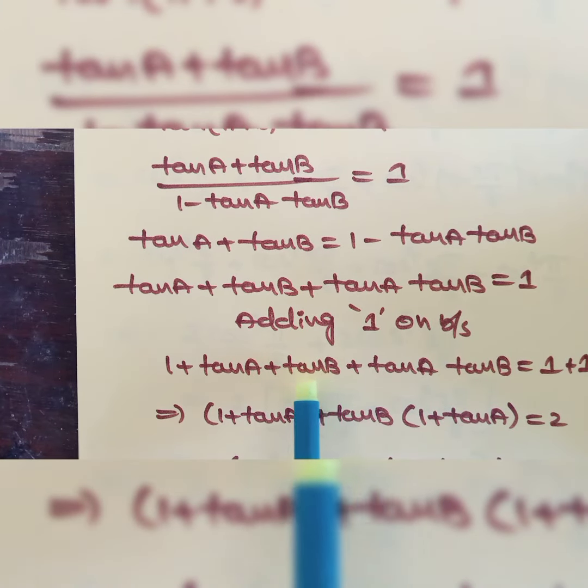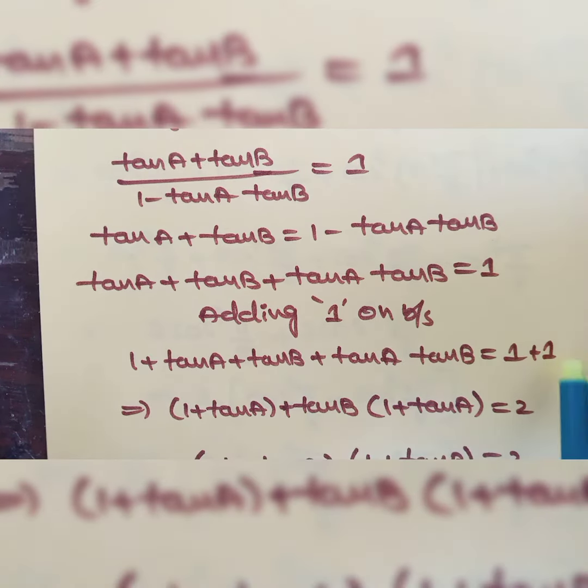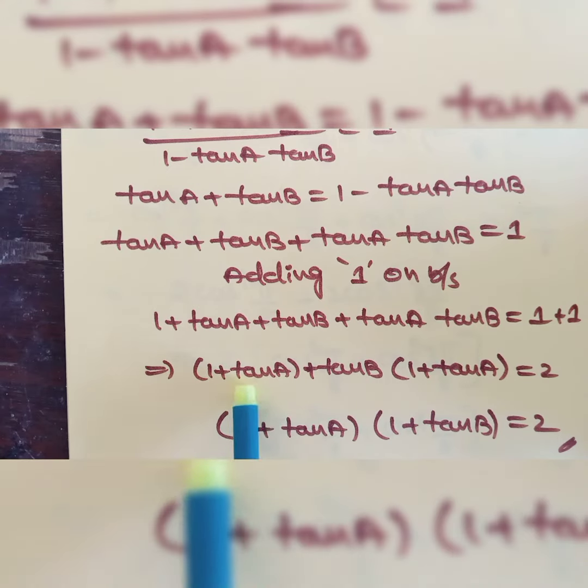Finally we are factoring by taking (1 plus tan A) common. We will get (1 plus tan A) times (1 plus tan B), which is equal to 1 plus 1, which is 2. Here 1 plus tan A and here also 1 plus tan A.